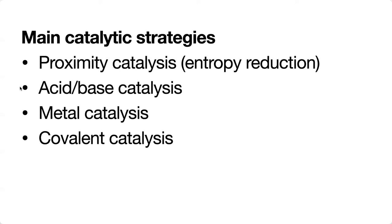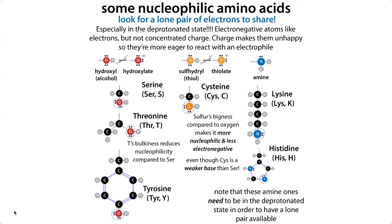It also includes metal catalysis, which can help pull things together because metals can act as general hubs — they can bind to a lot of things. Metals can also stabilize negative charges, give and take electrons. And then we have covalent catalysis, where the enzyme forms a covalent bond with the substrate. Some amino acids that act as general acids and general bases can also do covalent catalysis by forming temporary bonds with the substrate.